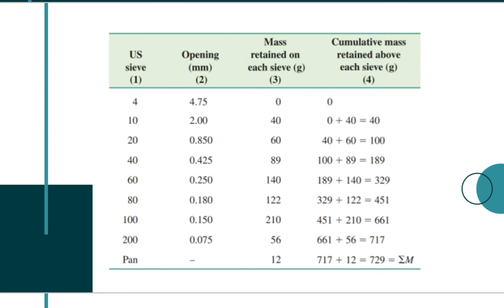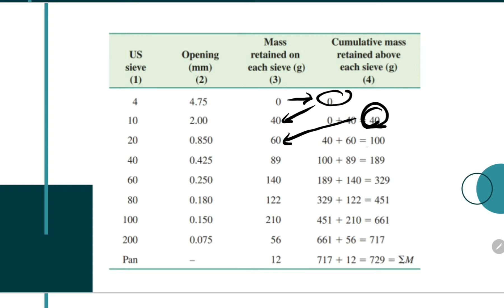How do we solve for the cumulative mass? That's quite easy. First, you simply copy the first mass retained value. Then to accomplish the second row, you simply add the previous cumulative value with the next mass retained value. So 0 plus 40, you'll get 40. To solve for the third cumulative mass, you simply add the previous cumulative mass and the next mass retained. So 40 plus 60, you'll get 100. You simply add this value to the next mass retained: 100 plus 89, you'll get 189.